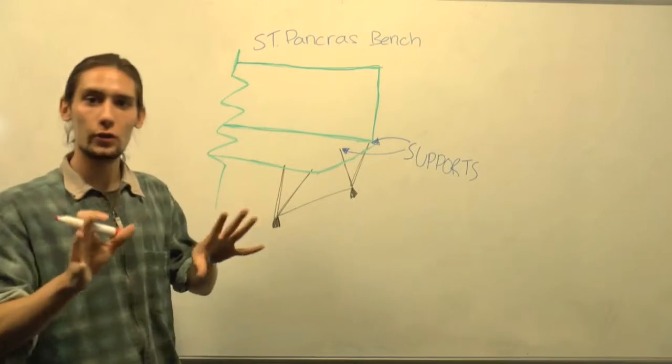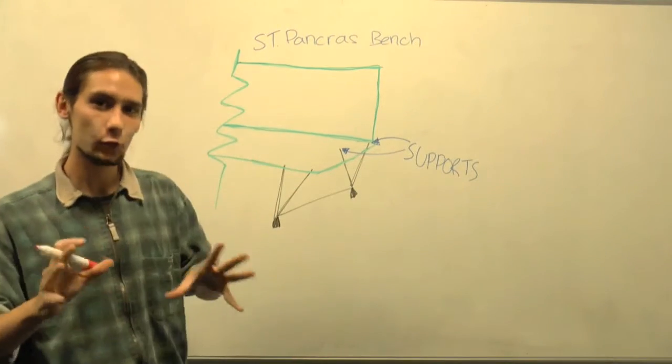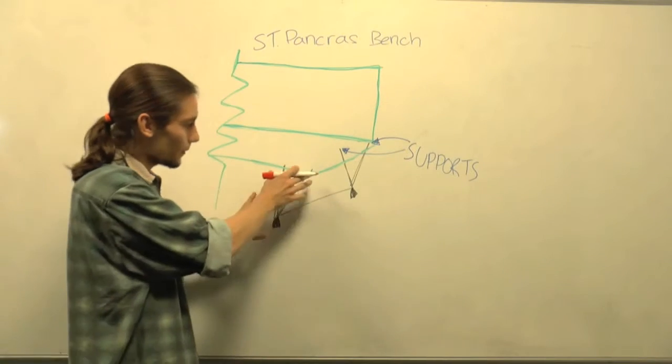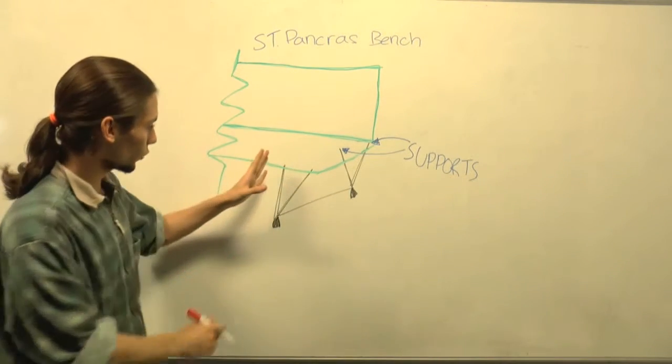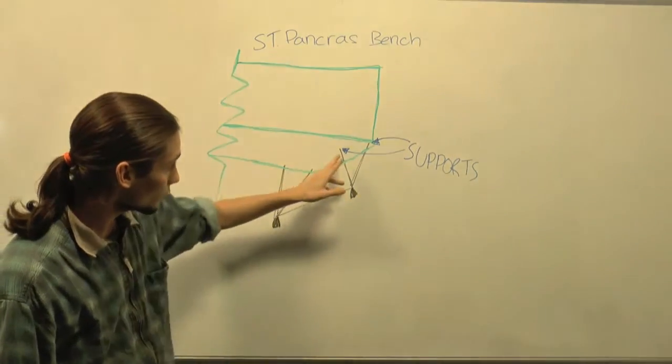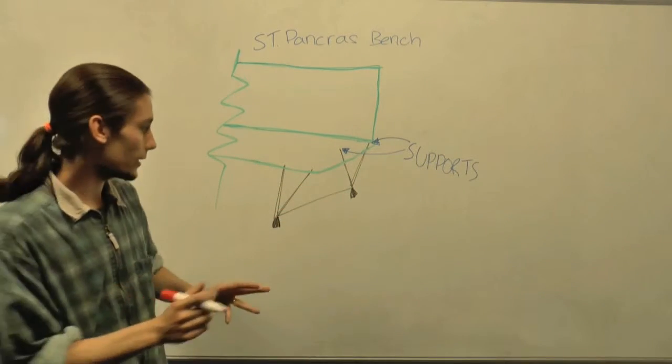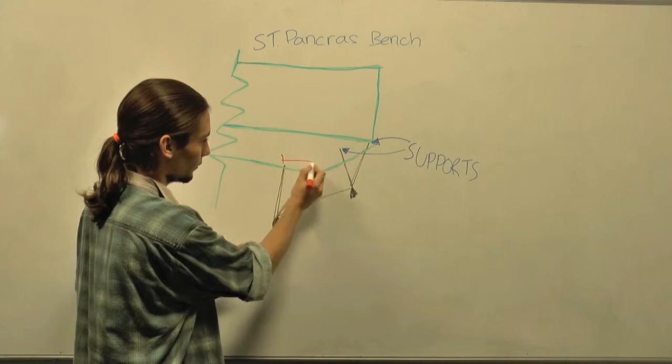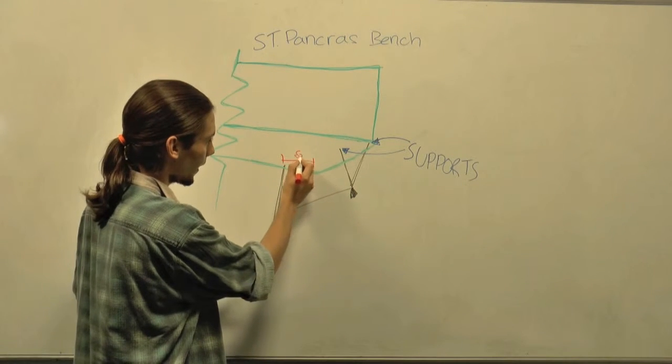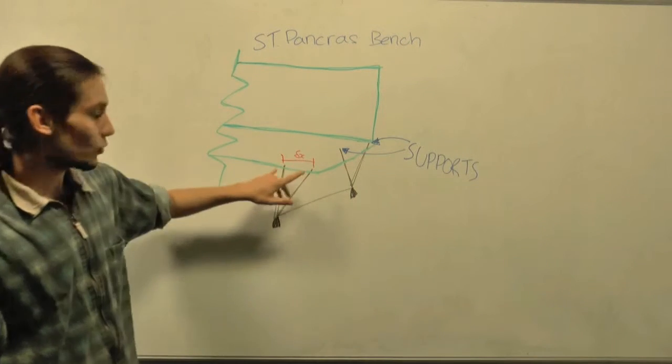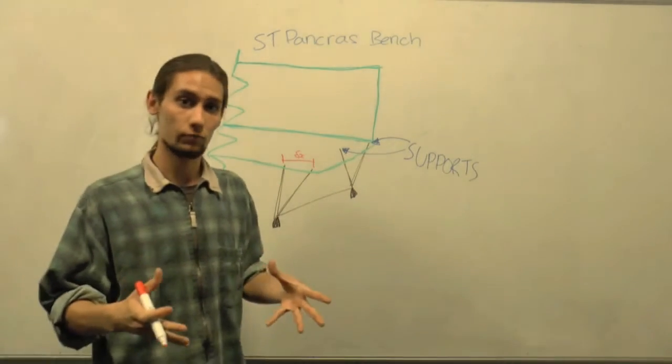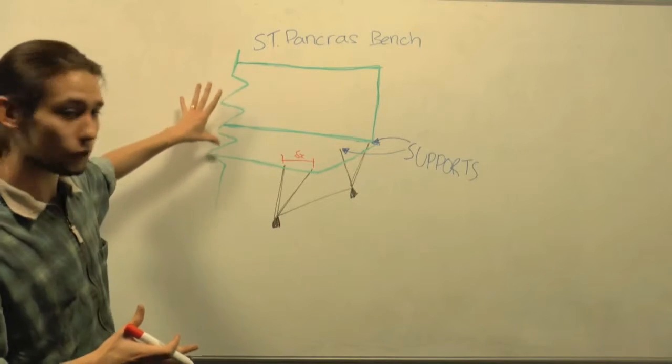So we're going to have a little close look at the supports of this bench because actually they're a little bit unusual and they exhibit some interesting behavior. The thing you really want to notice about this bench is although the individual members of the supports are very slender, they're offset at a distance from each other. You can see the dx here.